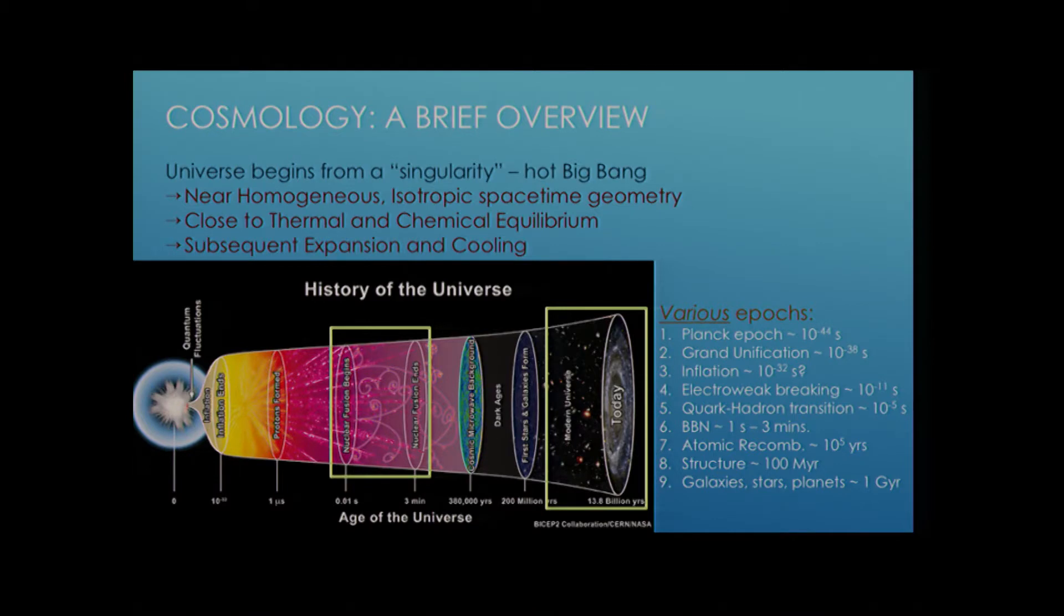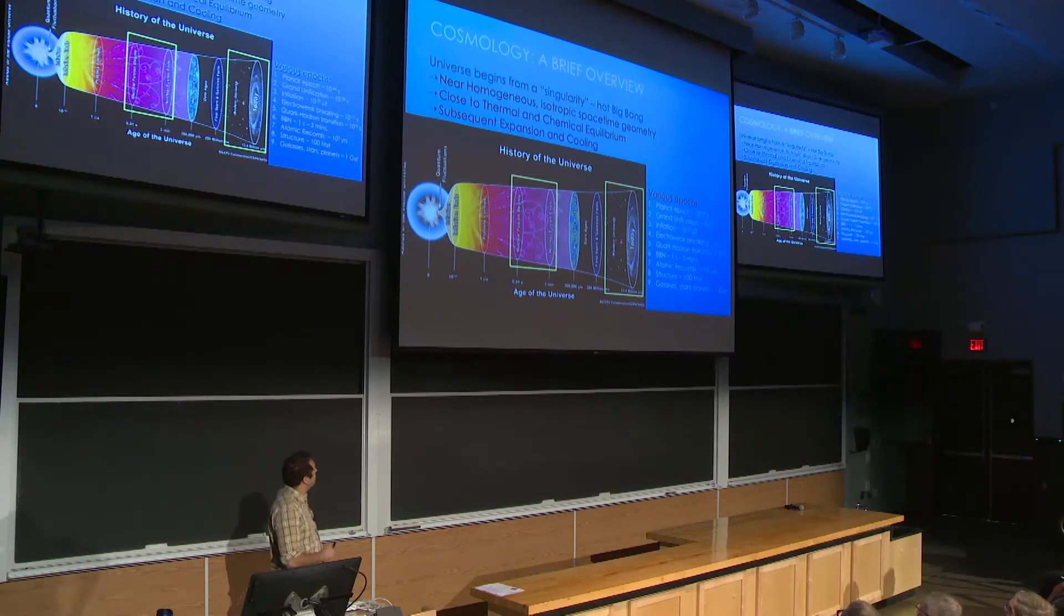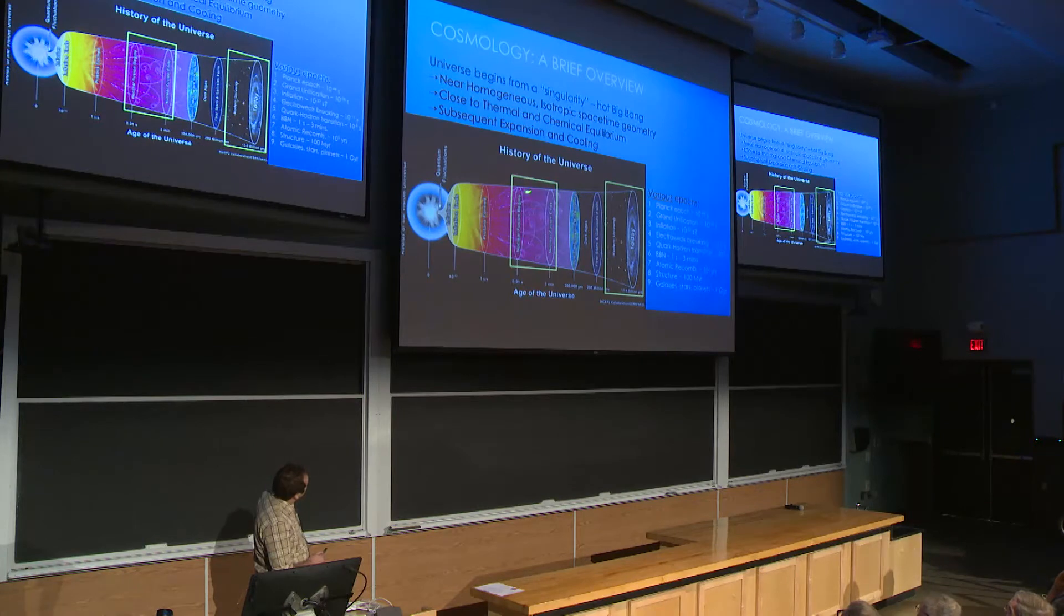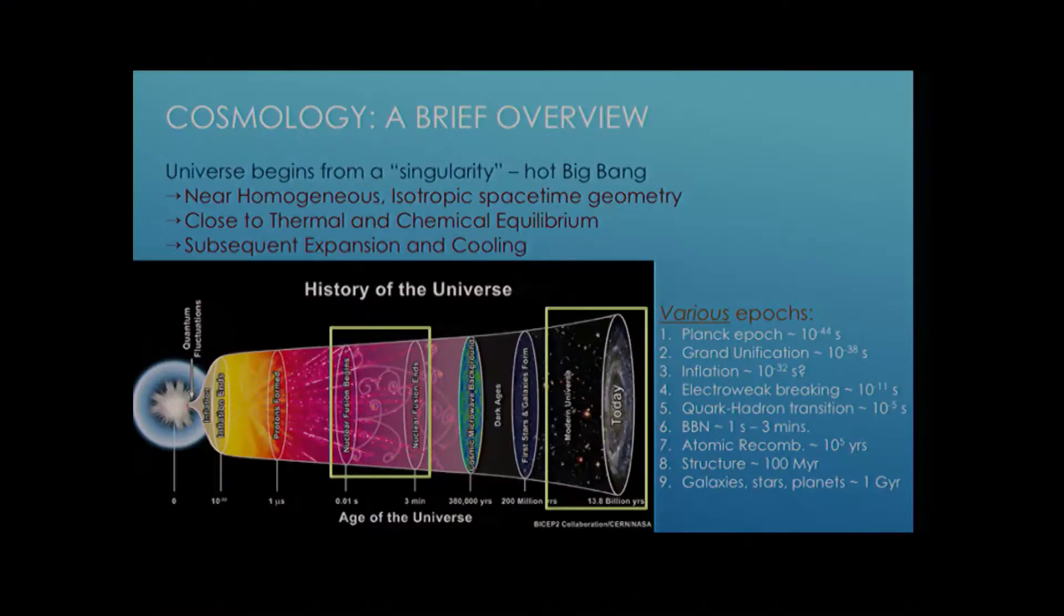So now that we have an idea of what nuclear physics is, let's talk about where this happens in the history of the universe. Our idea right now of the Big Bang is that the universe begins from a singularity. This is called the Hot Big Bang Model. It's very near homogeneous isotropic spacetime geometry. So this means that it's the same in every location, and it looks the same in every direction. It's close to thermal and chemical equilibrium. So after the Big Bang, the universe expands and cools until the present day.